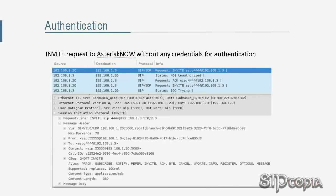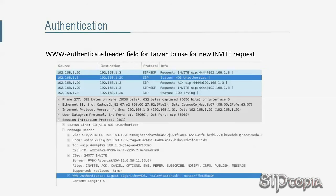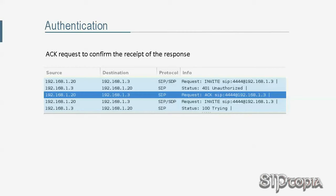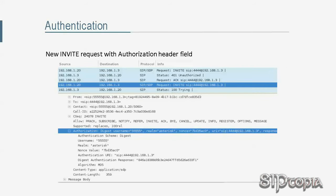Similarly, when Tarzan first tries to call Jane, his SIP phone sends an INVITE request to the Asterisk PBX without any credentials to authenticate. As a back-to-back user agent, Asterisk acts like the user-agent-server of Jane in this call scenario. As a result, Tarzan's SIP phone receives a 401 Unauthorized response — not a 407 Proxy Authentication Required response. The response includes a WWW-Authenticate header field with certain parameters for the user-agent-client to use in its new INVITE request. The UAC follows up with an ACK request to confirm receipt of the response before reattempting the call. After the ACK, the user-agent-client sends a new INVITE request with credentials listed in the Authorization header field.